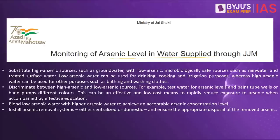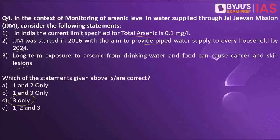This practice question is taken from the PIB. When it comes to JJM, it was a program started in 2019 — not 2016 — with the aim to provide piped water to every household by 2024. When we consider arsenic poisoning, there are a number of states impacted by arsenic contamination of water, such as West Bengal, Assam, Punjab and Uttar Pradesh. Assam has one of the highest shares of people impacted by arsenic consumption.